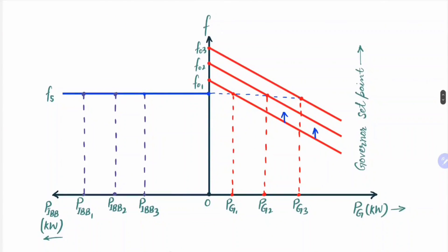As soon as the alternator is connected to the infinite bus bar — once it is synchronized — it will start floating. Floating means neither it will supply active power nor consume active power. However, keep in mind that it will supply a very small active power which can be ignored. Now we are going to increase the mechanical input to the alternator by increasing the governor set point.